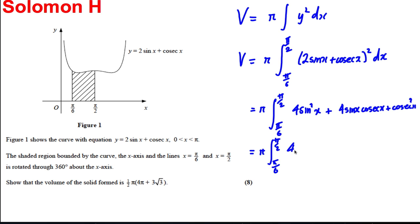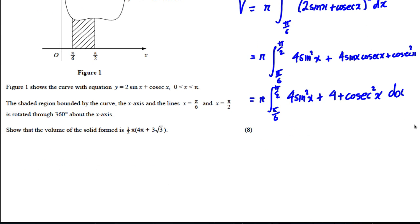Which is pi times the integral between pi by 6 and pi by 2 of 4 sine squared x. Now cosec is 1 over sine, so sine times 1 over sine is just 1, so this is going to be plus 4 plus cosec squared x with respect to x.